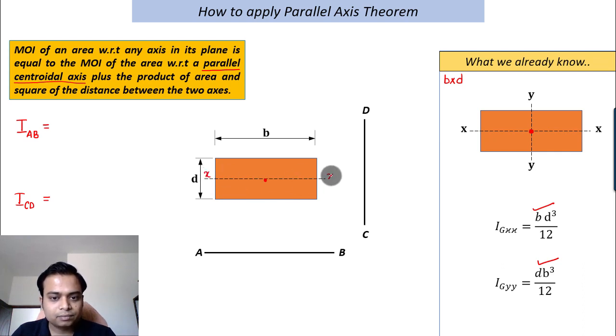So the moment of inertia about AB is equal to the moment of inertia of this rectangle about an axis parallel to AB, that is xx, Igxx, whose value is bd³ by 12, plus area, that is bd, multiplied by the distance between the two parallel lines squared, y².